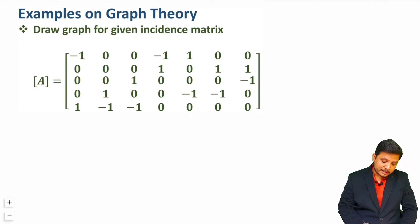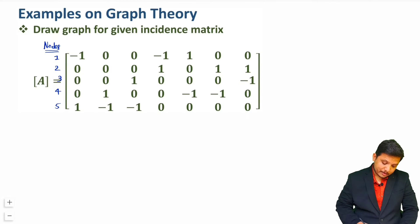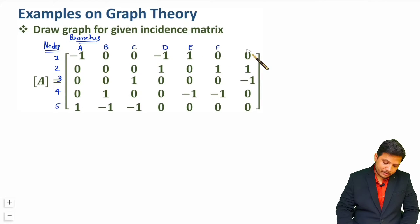With an incidence matrix, you should know that vertically we are having nodes. So let us give naming to nodes. Vertically we are having node 1, node 2, node 3, node 4, and node 5. And horizontally we are having branches. Let me give naming to branches: branch A, branch B, C, D, E, F, and G.